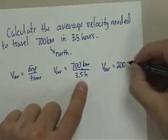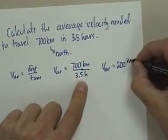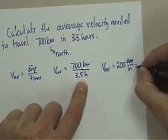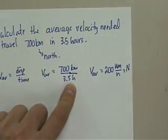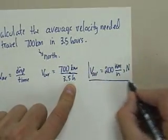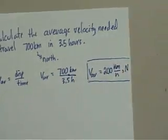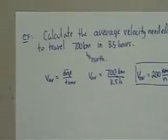You look at your units. Kilometers divided by hours. Kilometers per hour. And then we need to say the direction as well. North can be expressed as a capital N. There you go. So that is how you do just a simple word problem.